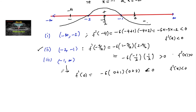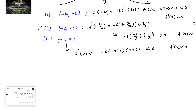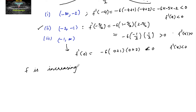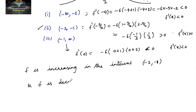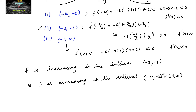We can conclude from here: the given function f is strictly increasing in the interval (-2, -1), that is -2 < x < -1. And f is strictly decreasing in the intervals (-∞, -2) ∪ (-1, +∞). Thank you.